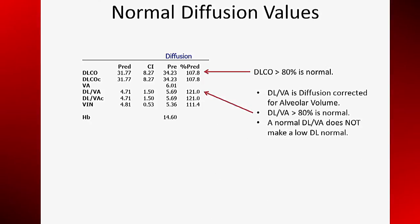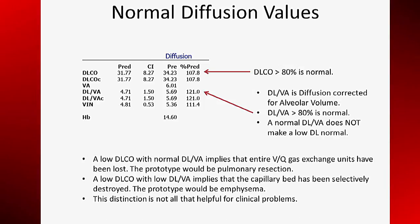The correction of diffusion for alveolar volume is often misinterpreted. A low DL that corrects to 100% DL to VA ratio is not normal. The DL to VA ratio can give information about the nature of the diffusion impairment. If entire VQ units are destroyed together, such as in lung resection, a low DL will correct to a normal DL to VA ratio. In emphysema, however, capillaries are destroyed without loss of airspace, which leads to a low DL that does not correct. I have not found this distinction to be very helpful in clinical management.